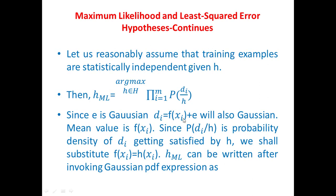Since ei is Gaussian, di = f(xi) + ei will also be Gaussian, with mean value f(xi). Now P(di|h) represents the probability that, given a particular h, that h will classify di properly. Since it is such a probability, we can change f(xi) to h(xi), because this is the probability of classifying correctly. So the mean value can be written as h(xi) instead of f(xi).